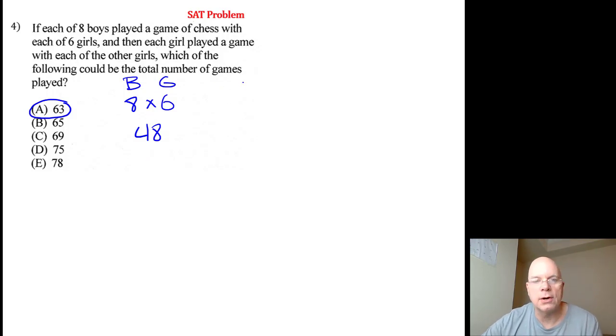When the girls play each other, you choose a girl - you've got six girls to choose from - and then she plays another girl. She's not going to play herself, so you're multiplying by five girls to choose from. But if girl A plays girl B, that's the same as girl B playing girl A, so we divide by two. So 30 divided by two means there'll be 15 matches for the girls playing the girls.